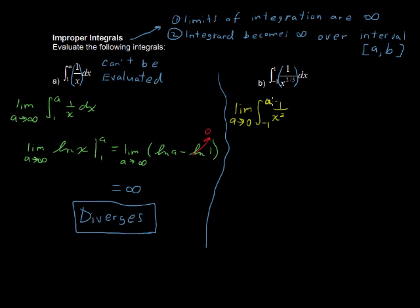Okay, negative 1 to a, of 1 over x to the 2 thirds, plus the limit as a approaches 0, of a to 1. 1 over x to the 2 thirds dx.